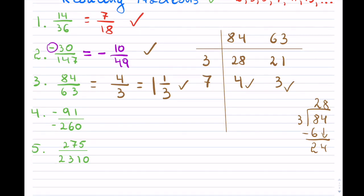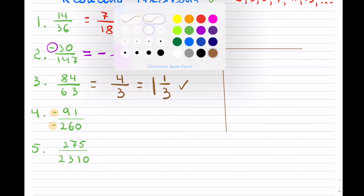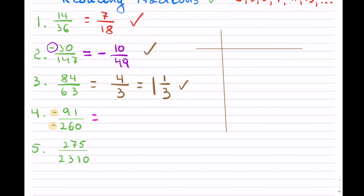Example number 4. I notice there is a negative on top and a negative at the bottom. Negative times negative equals positive, so my answer will be positive. Now I have 91 and 260, and to reduce I will go through the primes one by one.